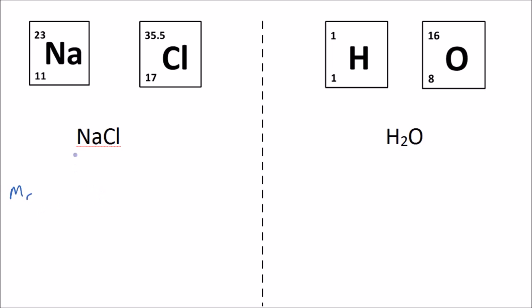So for sodium chloride, the relative atomic mass of sodium is 23, and we add that to the relative atomic mass of chlorine, which is 35.5. And that gives us a relative formula mass for sodium chloride of 58.5.